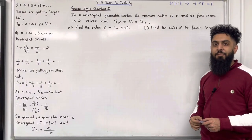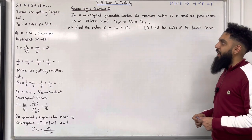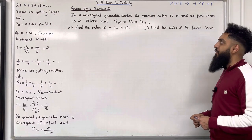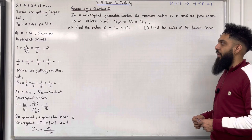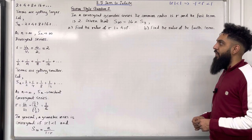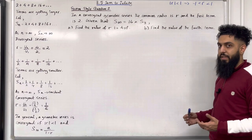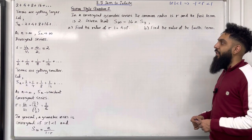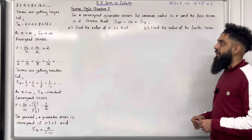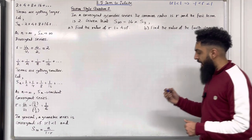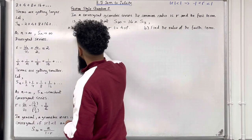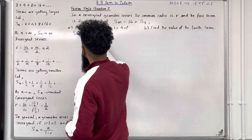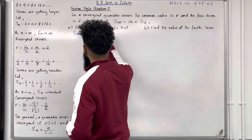Moving on to exam style question 2. In a convergent geometric series the common ratio is r and the first term is 2. Given that S infinity is equal to 16 multiplied by S3, the sum of the first three terms, part A: find the value of r to four significant figures.